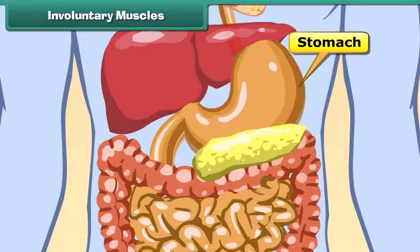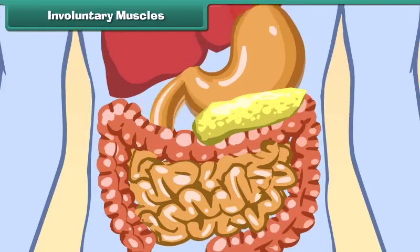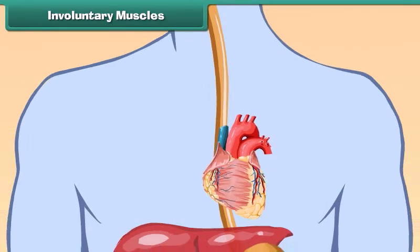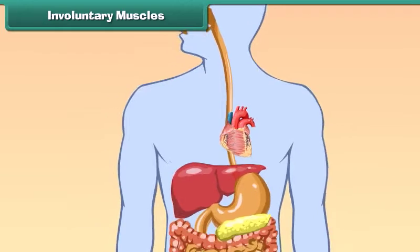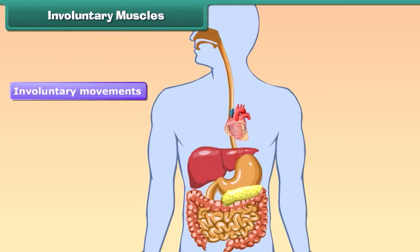The functions of the stomach, intestines, and heart go on in a fixed manner. The functioning of these organs is not dependent on our wishes. Such muscles are called involuntary muscles and their movements are called involuntary movements.